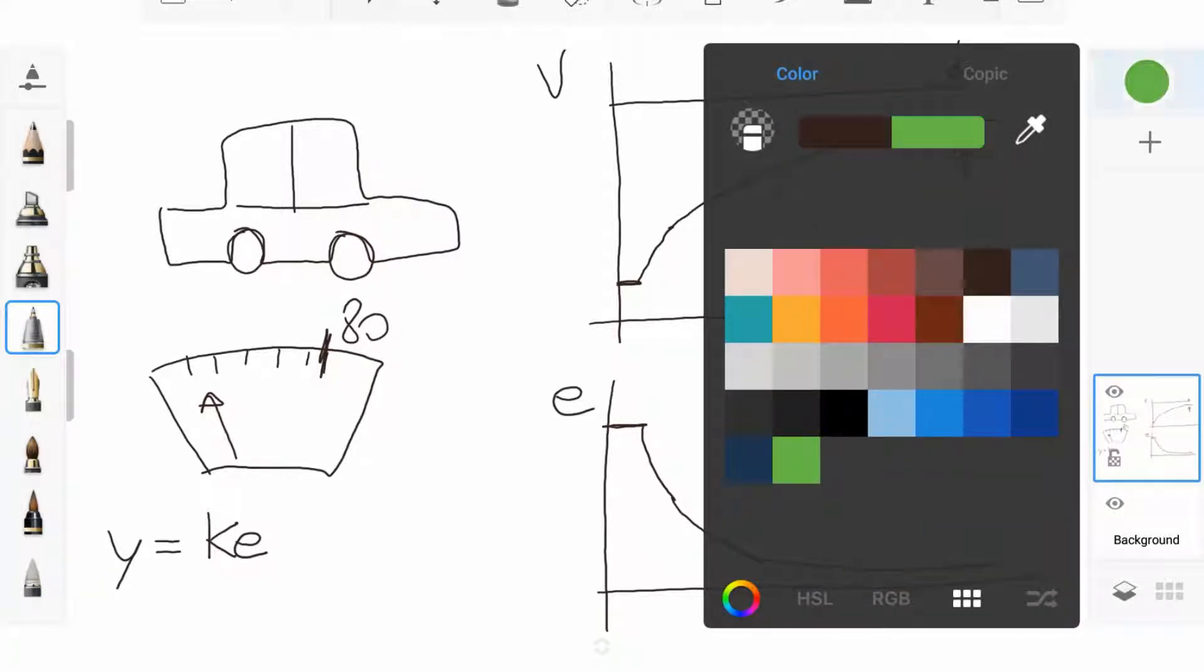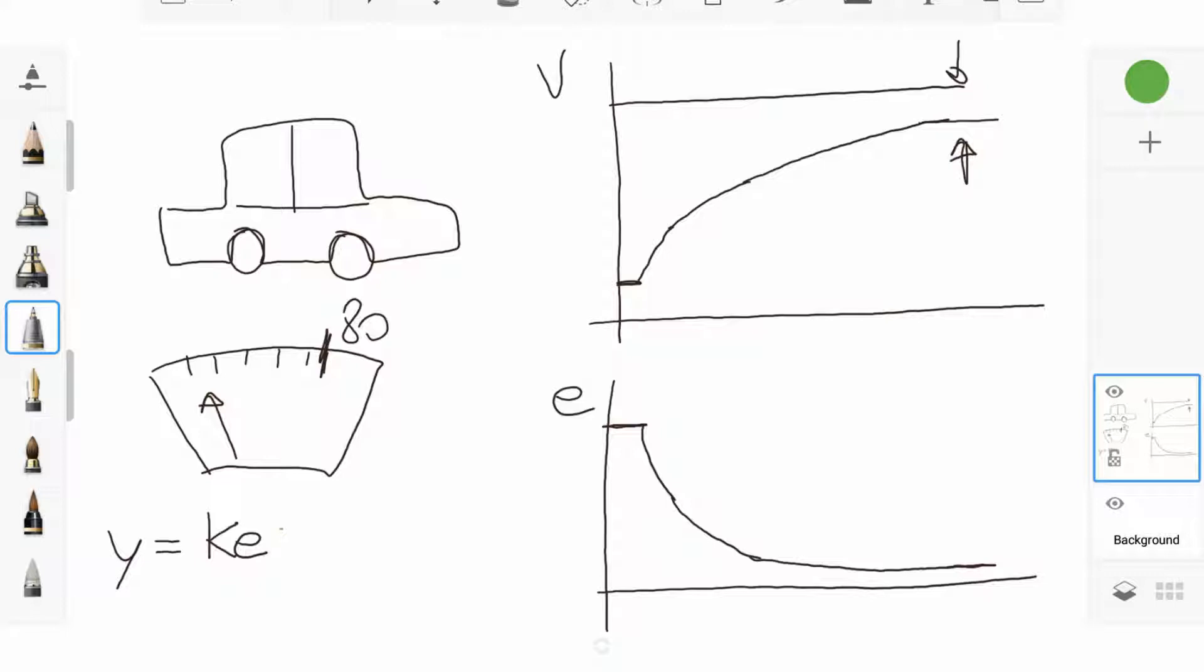Let's see now what happens if we add an integral term. Now the output is the contribution of two terms. One is proportional to the error, and one is proportional to its integral over time, which can be seen as the area below the error. Since we have the contribution of the error and its area, the output at the beginning is higher, so the speed will increase much faster.